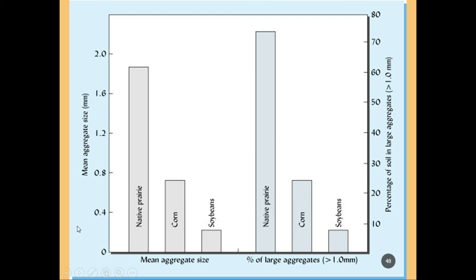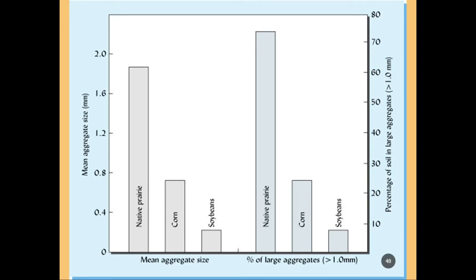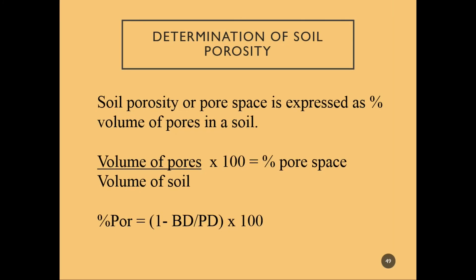Native prairies have very productive, good quality soils — they have much larger aggregates on average, and the percent of large aggregates is much higher. We will revisit this in a couple of slides.